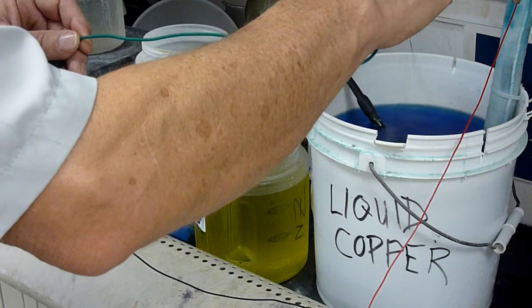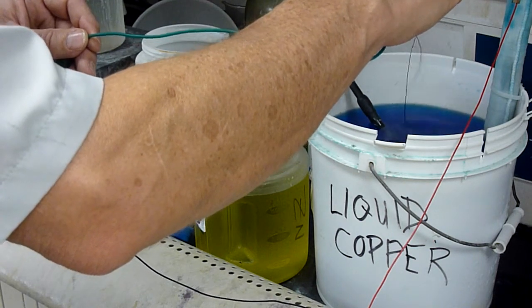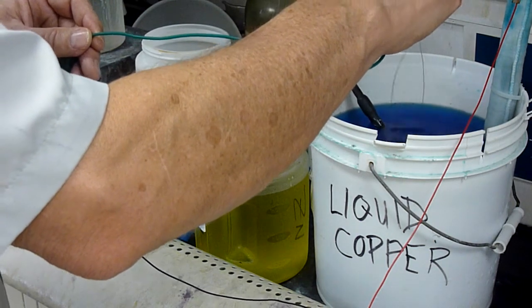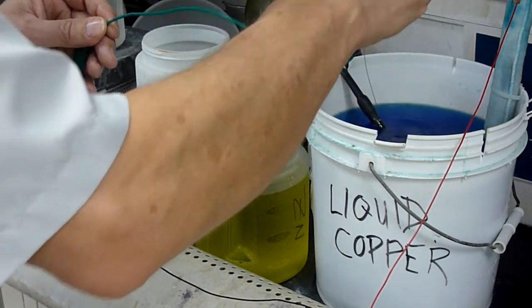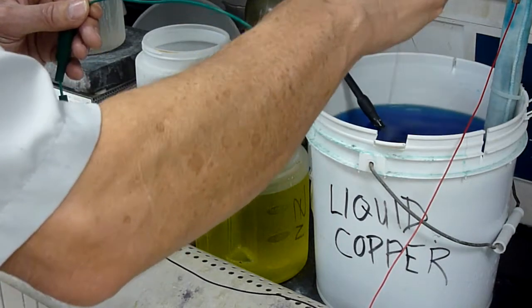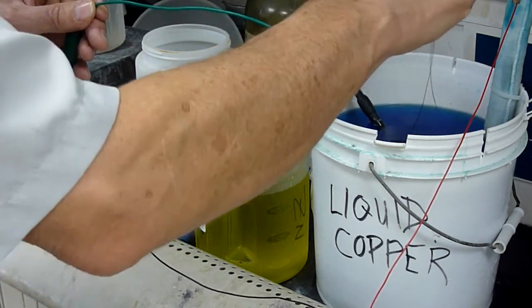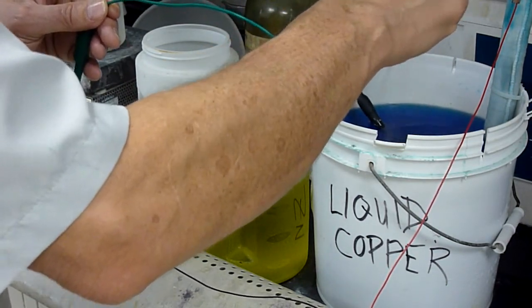The next step after this copper plating would be to go into the gold bath, put maybe 100 to 200 micro inches of gold on the piece, which gold would then become the interior surface of an electroformed waveguide structure.